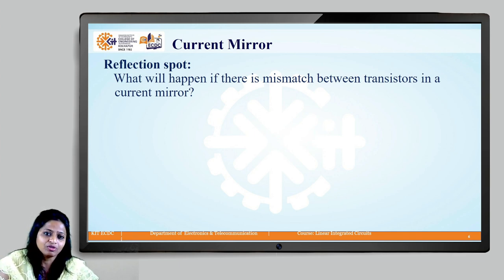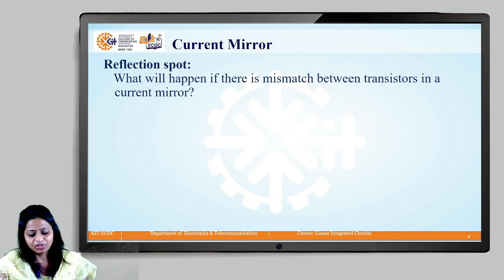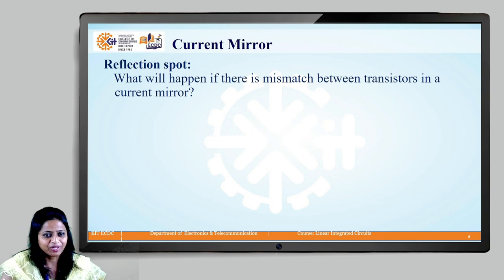This is what will happen when there will be the mismatching in the transistors that we are using in the current mirror. Here we have completed the topic current mirror. Thank you.